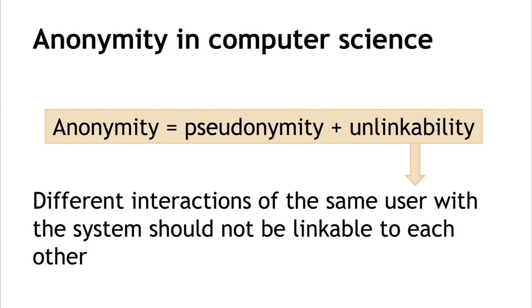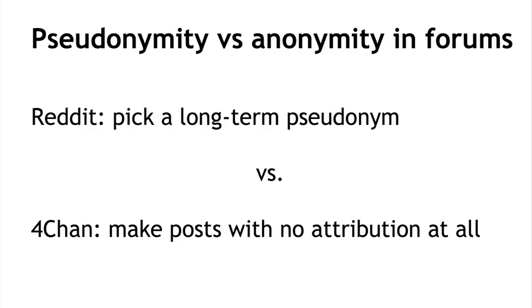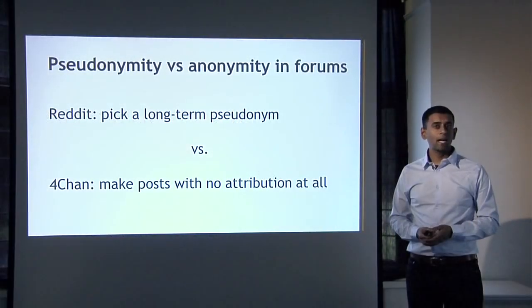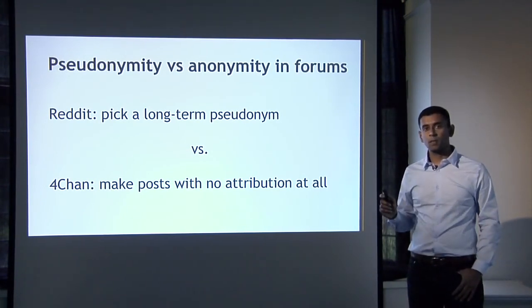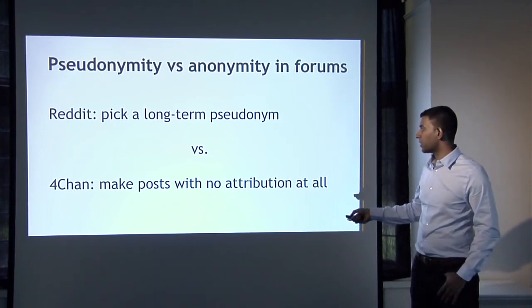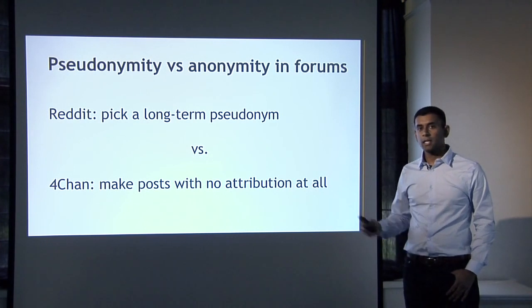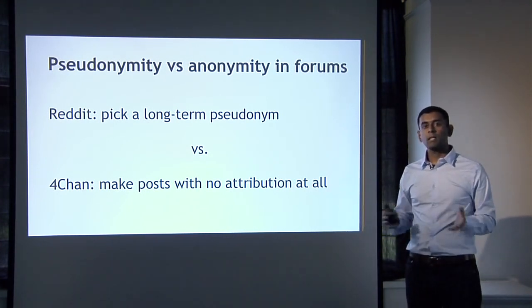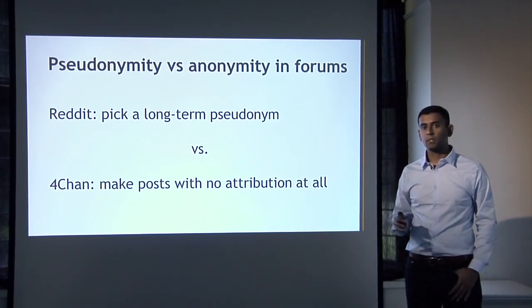This distinction between full anonymity and mere pseudonymity is familiar from other contexts. Online forums are a good example. Reddit is a forum where you pick a long-term pseudonym and interact over a period of time — it offers pseudonymous interaction. The opposite, fully anonymous interaction where you can make posts with no attribution at all, is the model you typically have in 4chan. Bitcoin is similarly in the pseudonymous model more than the anonymous model.